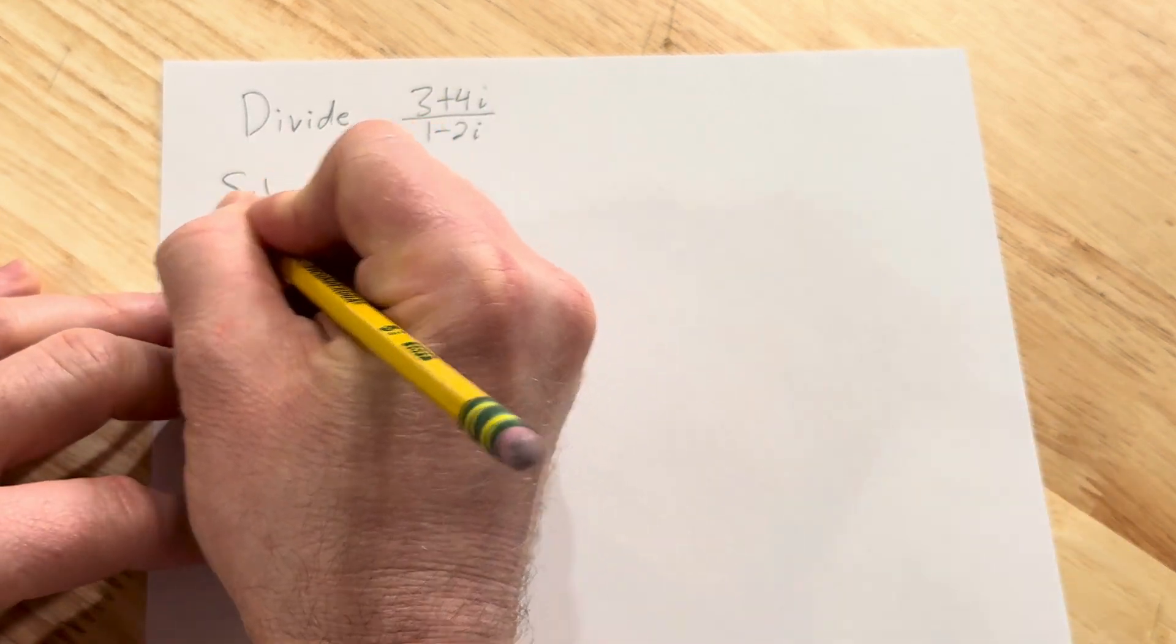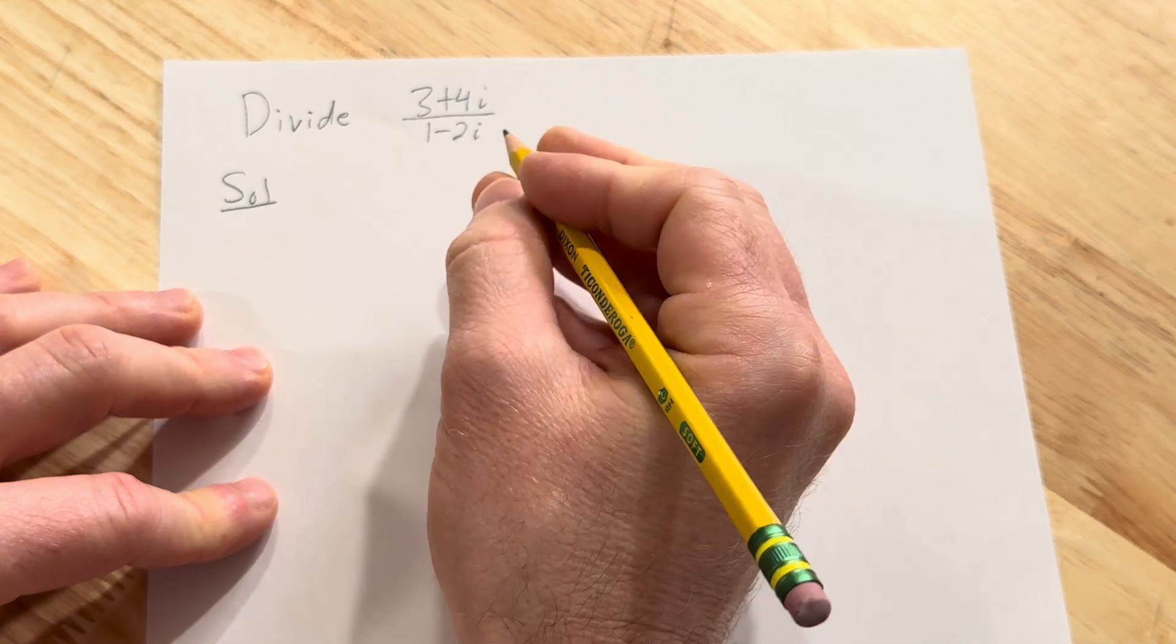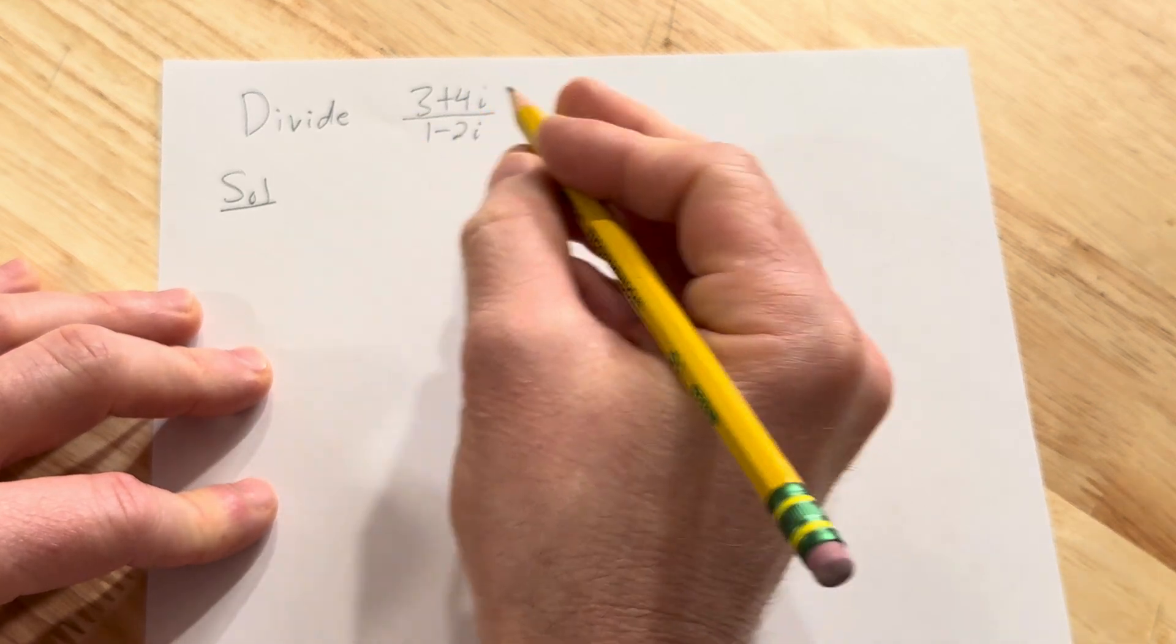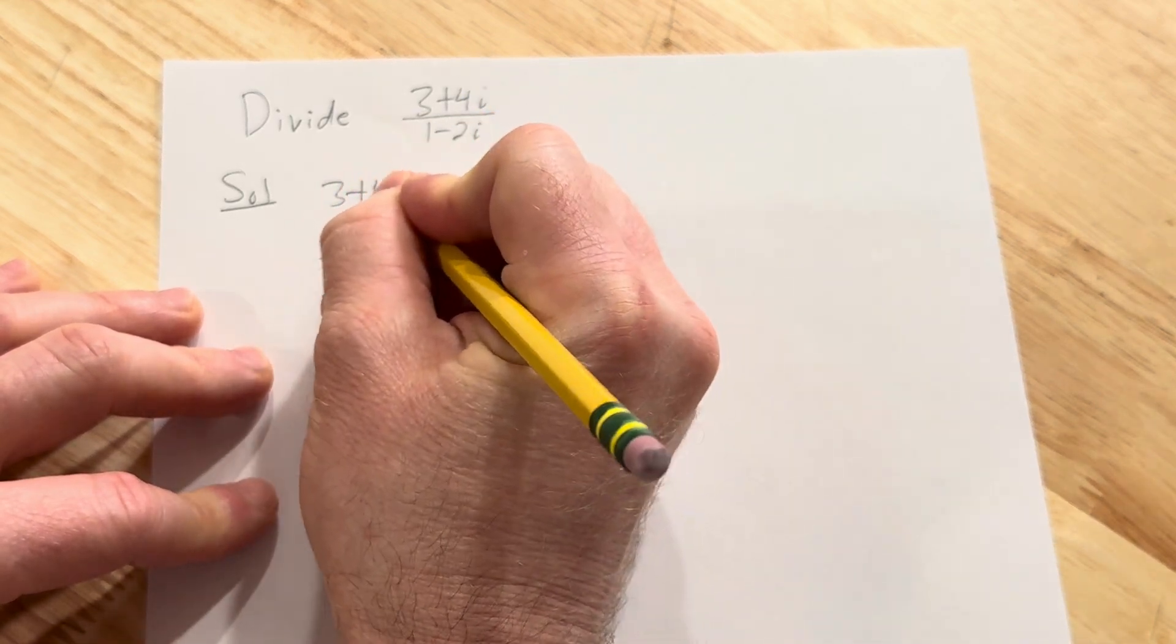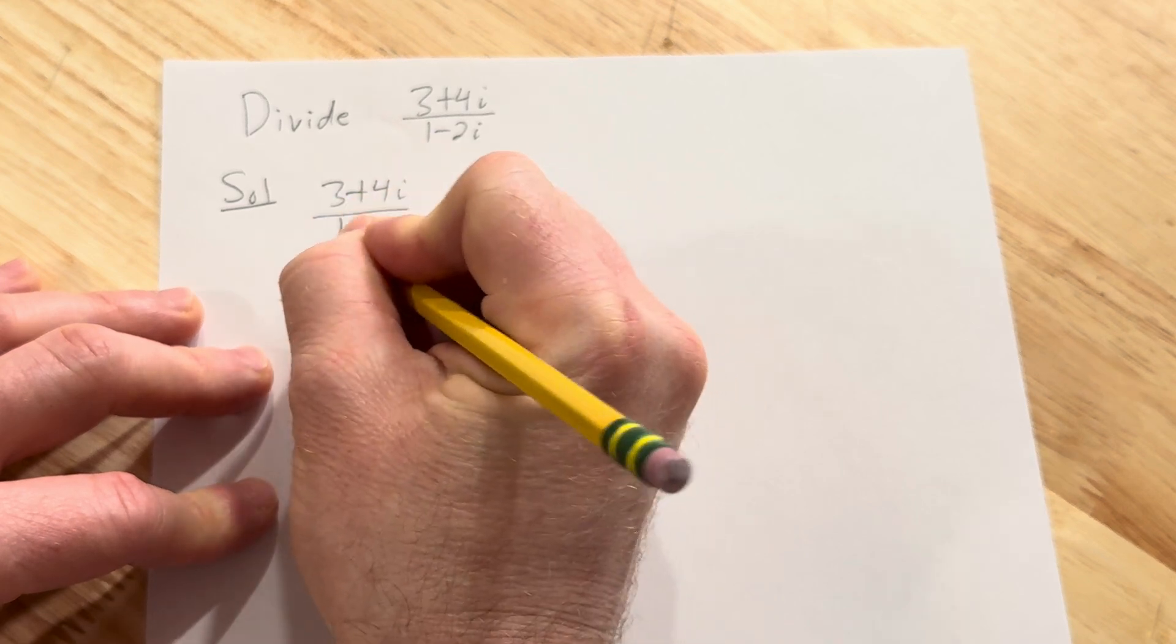Let's go ahead and start. Solution. So in problems like this the first thing I like to do is actually write down the problem again. So 3 plus 4i over 1 minus 2i.